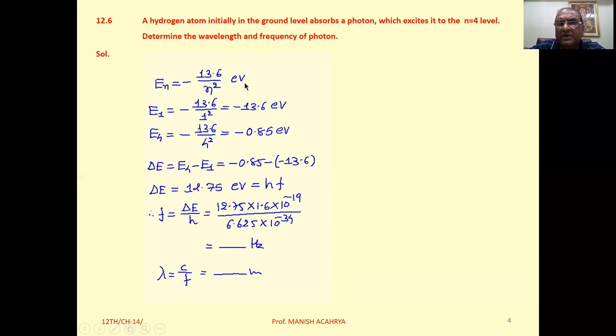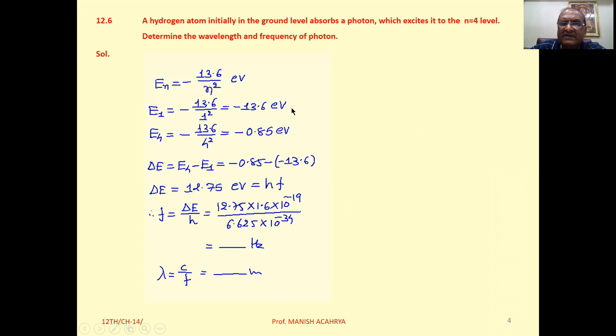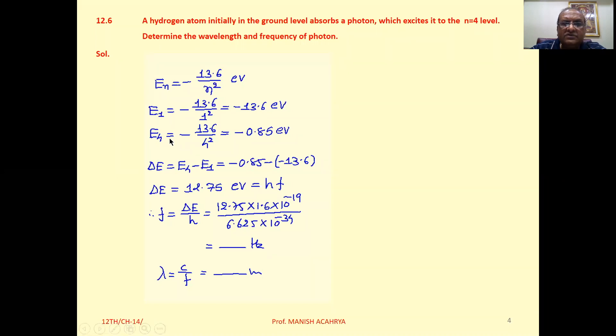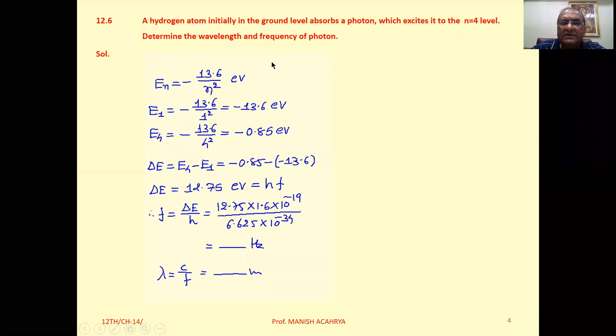In the ground level, first calculate the energy E1. That is minus 13.6 upon one square, which equals minus 13.6 electron volts. Then calculate the energy in n equals four level. That is equal to minus 13.6 upon four square, which comes to minus 0.85 electron volts.